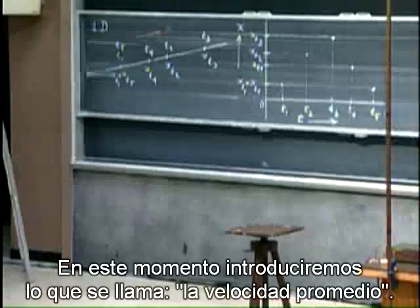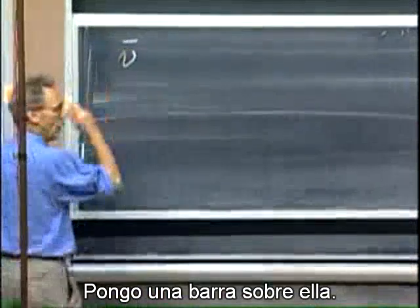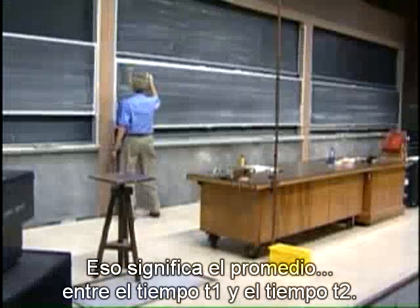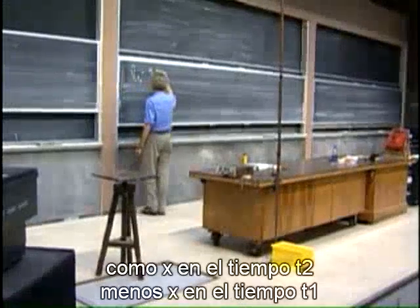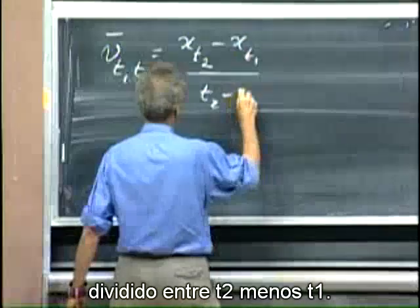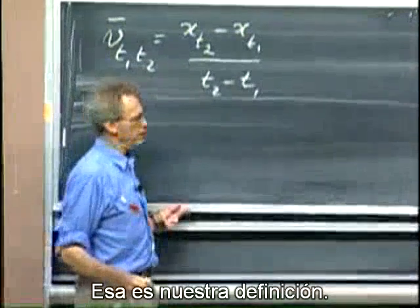Now we will introduce what we call the average velocity. I put a bar over it. That stands for average. Between time t1 and time t2, we define it in physics as x at time t2 minus x at time t1 divided by t2 minus t1. That is our definition.